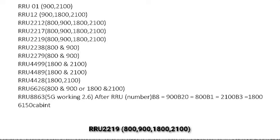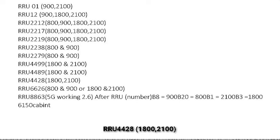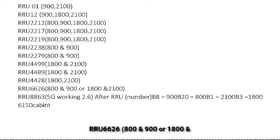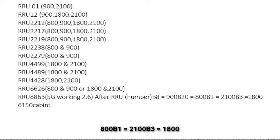RRU 2219: 800, 1800, 2100. RRU 2238: 800 amp, 900. RRU 2279: 800 amp, 900. RRU 4499: 1800 amp, 2100. RRU 2489: 1800, 2100. RRU 4428: 1800, 2100. RRU 6626: 800 amp, 900 or 1800 amp, 2100. RRU 8863: 5G working 2.6. After RRU number: B8=900, B20=800, B1=2100, B3=1800.